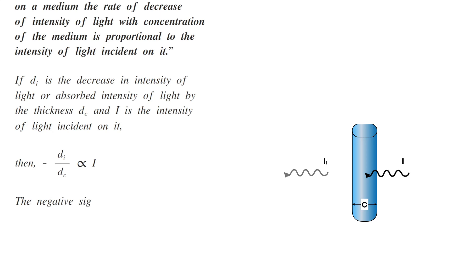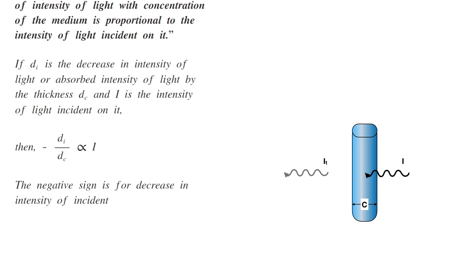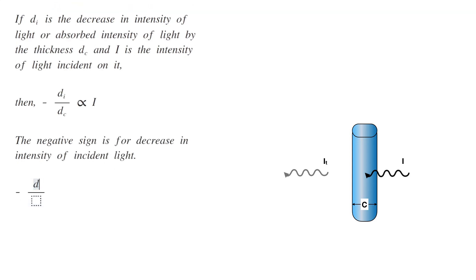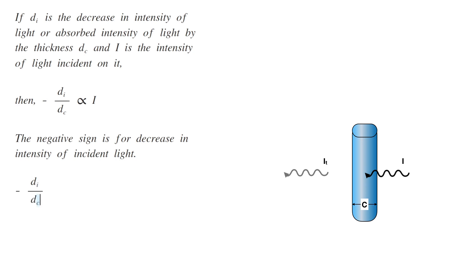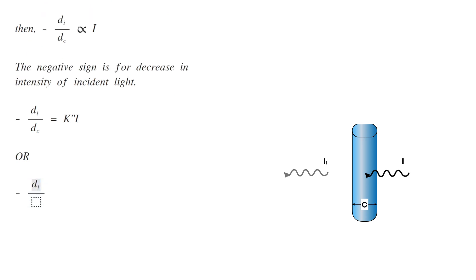The negative sign is for the decrease in intensity of incident light. Therefore, minus dI by dC equals K double dash I, or minus dI by I equals K double dash dC.